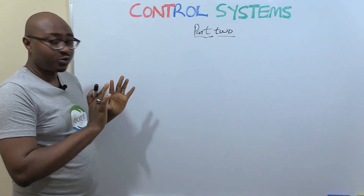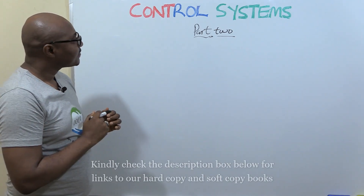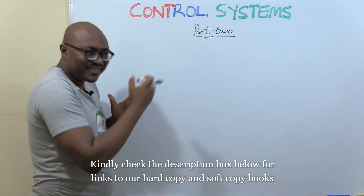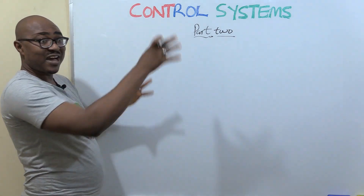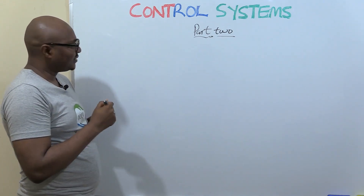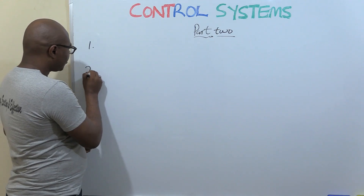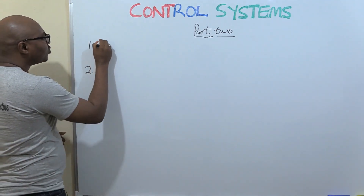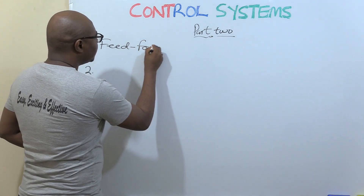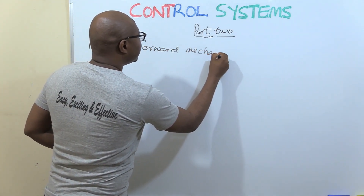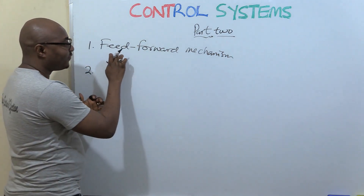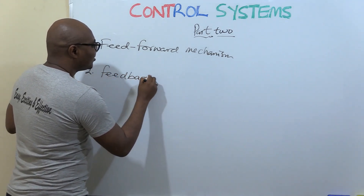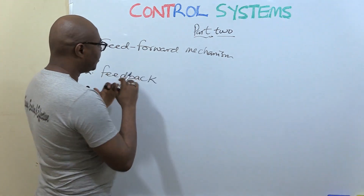Now there's another aspect of the control system we want to look at — the mechanism and the relationship between stimulus and response. There are two categories of mechanisms based on this relationship. The first one is called the feed forward mechanism, and the other one is called the feedback mechanism.